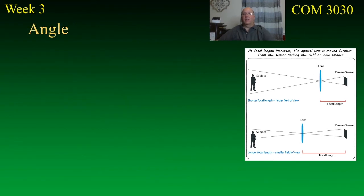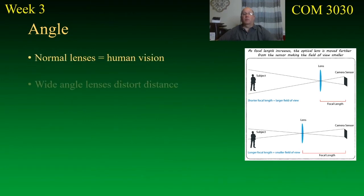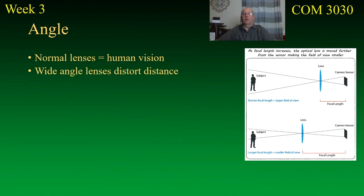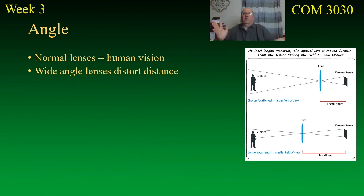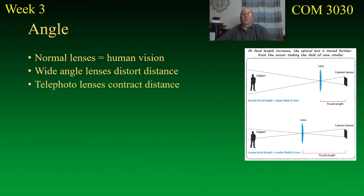It's important to understand how this works. A normal lens gives you human vision. Wide angle lenses distort distance — they give you a greater field of view, which means distance is automatically distorted. But what it also does is make everything look further away than it actually is. Telephoto lenses contract the distance.